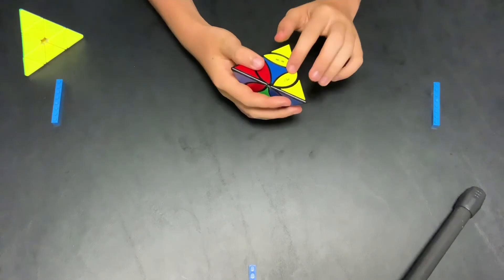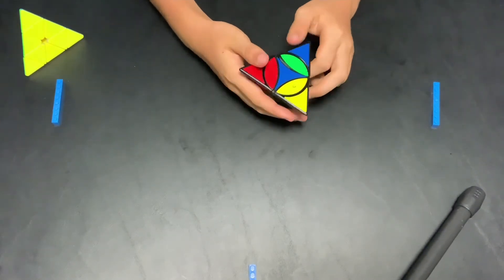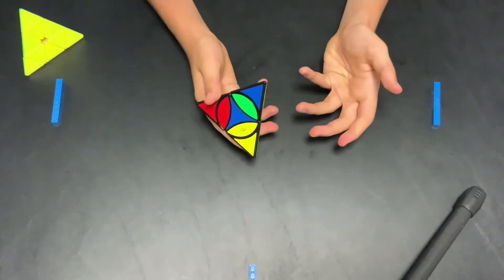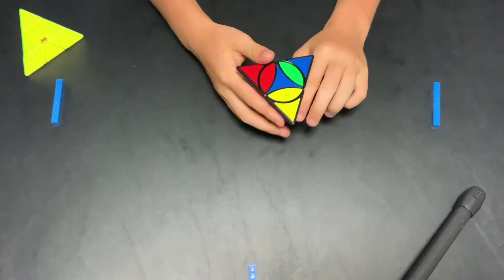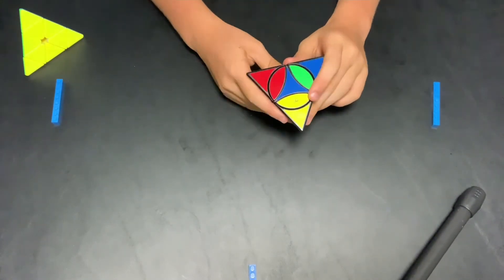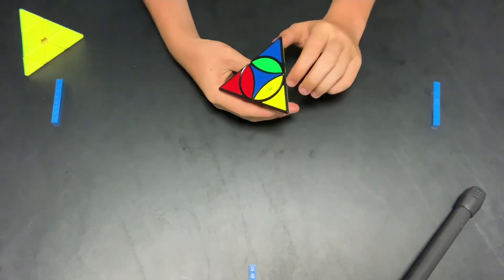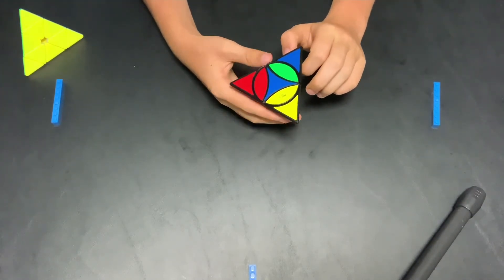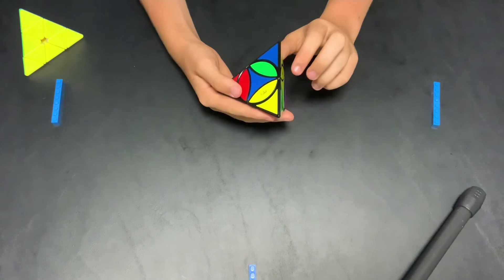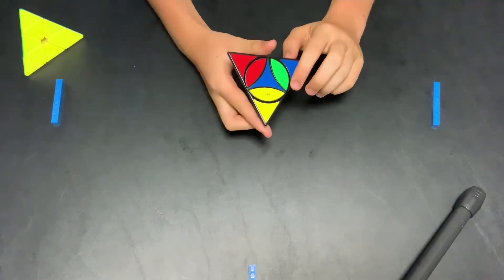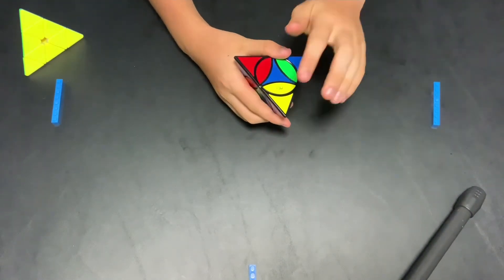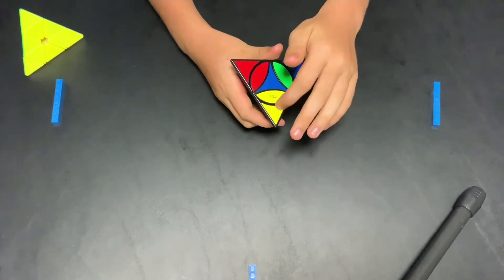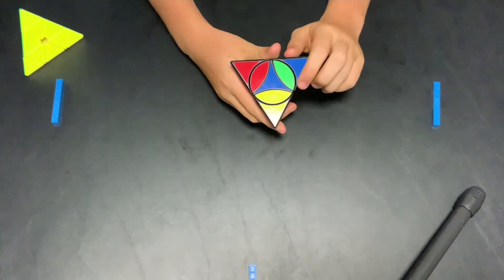So we're going to start with the yellow side. There are no white sides on this cube. It's just yellow and red and green and blue. So we're going to start with the yellow and what we're going to do is we're going to put all of our yellow corner pieces. That's the top piece, top triangular piece that we talked about earlier. We're going to put them all together.